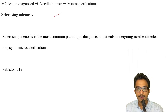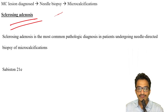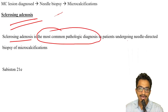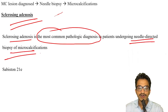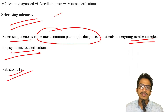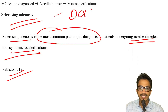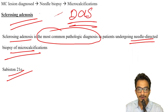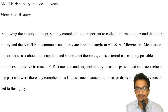Regarding sclerosing adenosis: sclerosing adenosis is the most common pathological diagnosis in patients undergoing needle-directed biopsy for microcalcification — a straight line from Sabiston. If sclerosing adenosis was not the option, the second best answer would be DCIS, but if it was an option, it should be the answer.